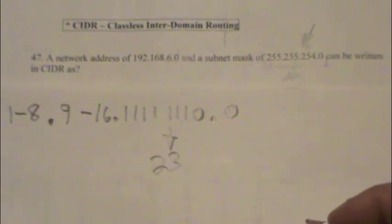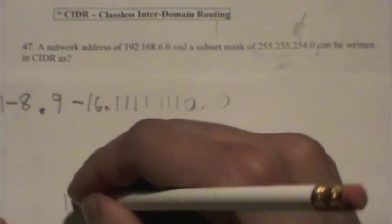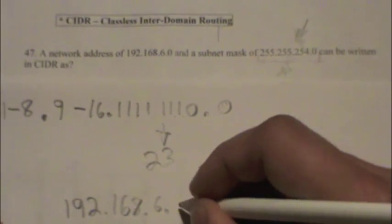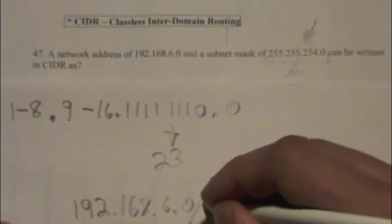So we know how to write it now. We have 192.168.6.0 slash 23.